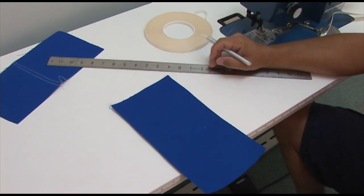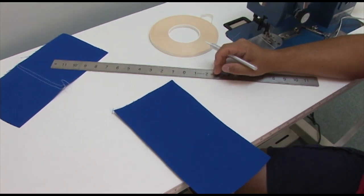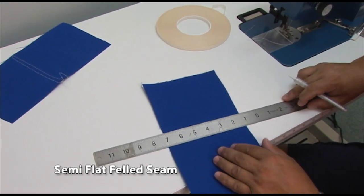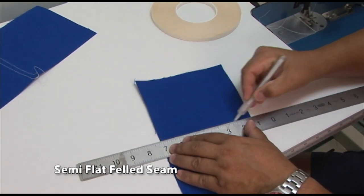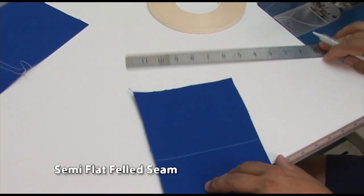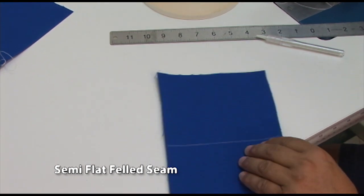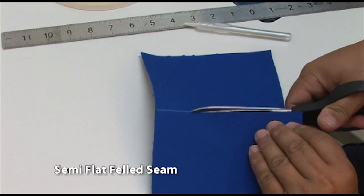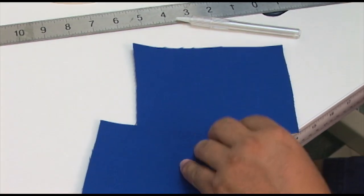Moving on, we'll talk about the semi-flat felled seam, and this is one of the more popular seams used in the industry for canvas work. Again, I'll give myself a cut line here. And now what we want to do, again, this should probably be heat cut as opposed to scissor cut, because these edges will be exposed, they'll be raw.